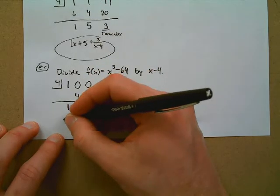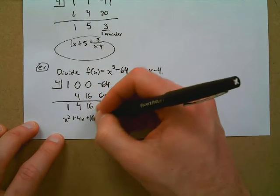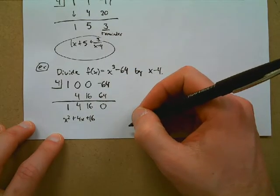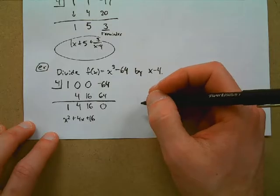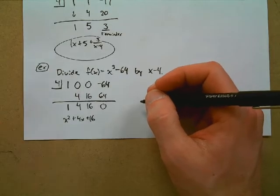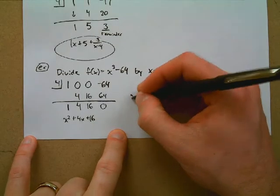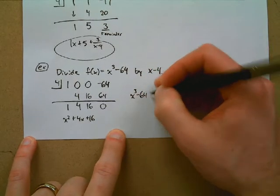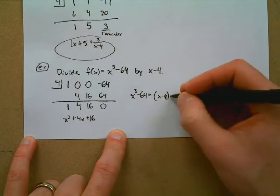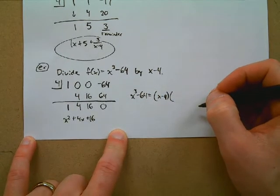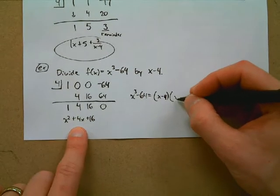Since the remainder is zero, x³ − 64 equals (x − 4)(x² + 4x + 16). We can use synthetic division as a factoring tool. We now have one more strategy to add to our factoring toolkit.